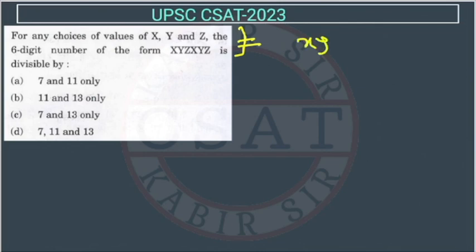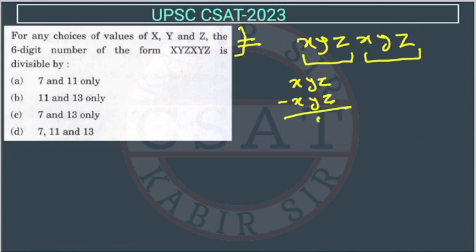So they have given number x, y, z and then x, y, z. Is this number divisible by 7? We already did one question related to divisibility by 7 in previous year questions. What we did there? We made a pair of three digit like this. And then alternatively we do plus and minus. So here only two. So what will be? This will be x, y, z minus x, y, z. So we will get zero here. If this is zero, it means this number is divisible by 7.